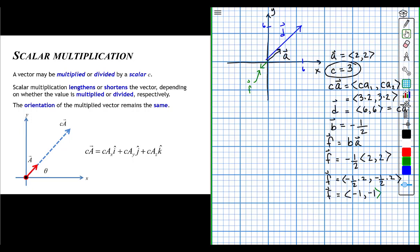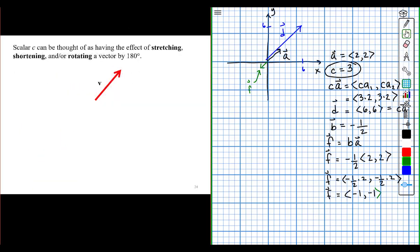So we could say scalar multiplication lengthens or shortens a vector depending on whether the value is multiplied or we have a fractional value. And the orientation of the multiplied vector remains the same unless it's a minus. It's a negative number. If it's a negative number, then it flips it by 180 degrees.